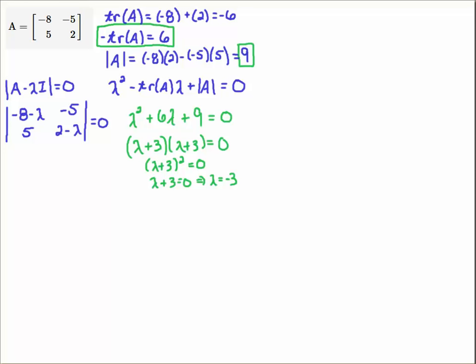So that means we're going to only be able to find one eigenvector. And if we want to find a second eigenvector, we'll need to find what's called a generalized eigenvector.